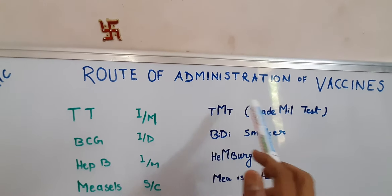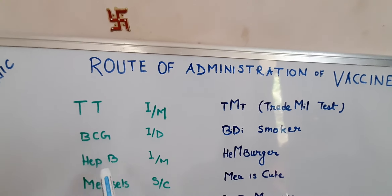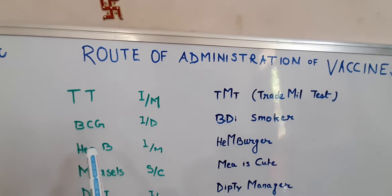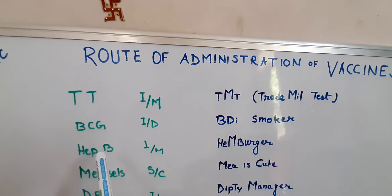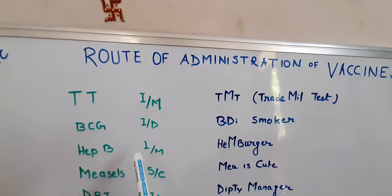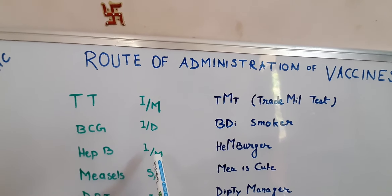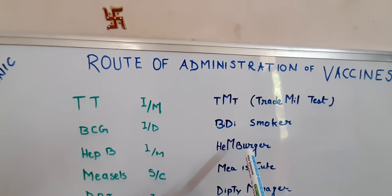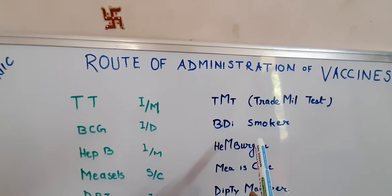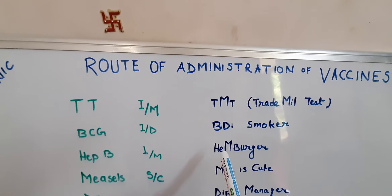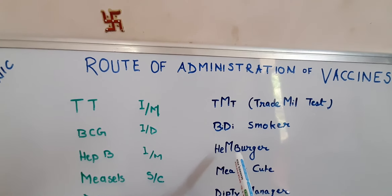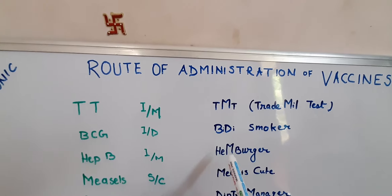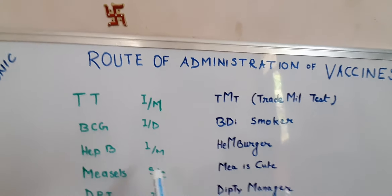For Hepatitis B, we take H and E from hepatitis, B from the vaccine, and M from intramuscular — making 'Hamburger.' H-E stands for Hepatitis, B stands for B-type virus, and M stands for intramuscular. So remember: the person eats a hamburger for Hepatitis B given intramuscular.